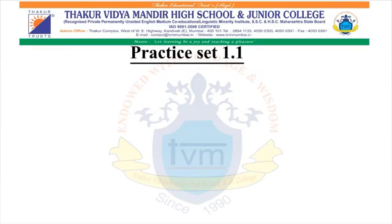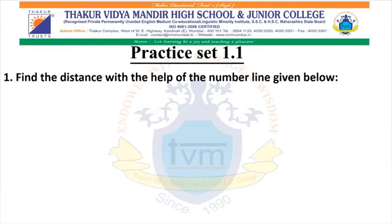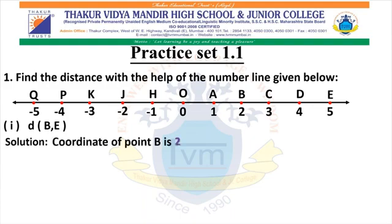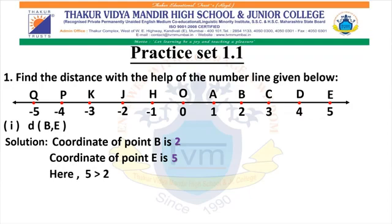Now we will see Practice Set 1.1. In that, the first question is: find the distance with the help of the number line given below. Here we have a number line. Find distance between point B and E, that is distance B, E. The coordinate of point B is 2 and the coordinate of point E is 5. So, 5 is greater than 2. Therefore, distance B, E equals greater coordinate minus smaller coordinate, that is 5 minus 2. Therefore, distance B, E equals 3.